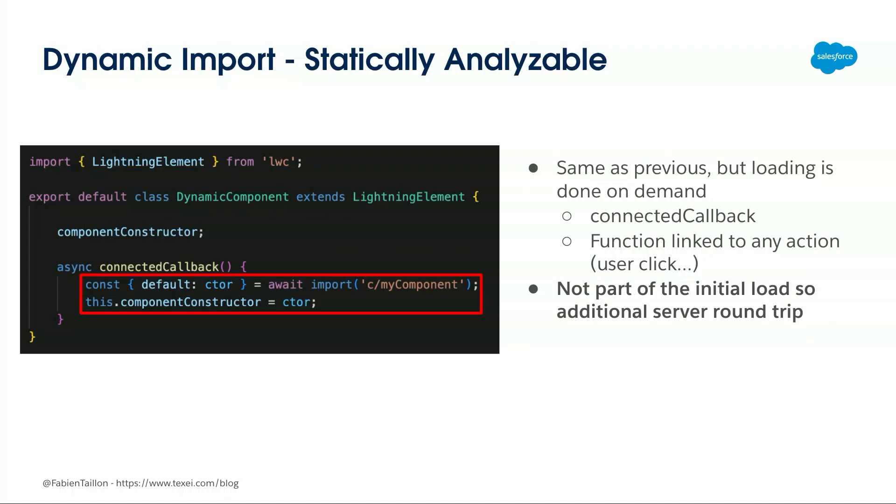The second option: you still generate it dynamically but don't put it in the import at the top — you import it at runtime when needed. This can be useful if you have ten components you'd like to instantiate dynamically but only one will be used, so you don't want to import all of them upfront. You can import it inside your function — here it's in connectedCallback, but it could be behind a button click. The key difference is that it only starts downloading the component when that import line is reached. So it's the same component, but downloaded not at first page load, only when that JavaScript line is executed.